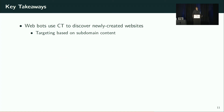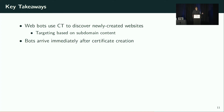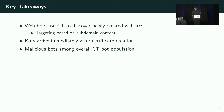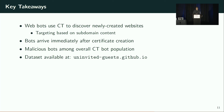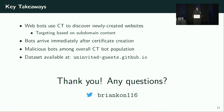In conclusion, we found that web bots use CT to discover newly created websites, that they target domains based on subdomain content, and exhibit different behaviors depending on their intent. Bots arrive immediately after certificate creation, meaning website administrators should create their certificate as the last step of setup, after all security mechanisms are in place and thoroughly tested. We also found that malicious bots are among the overall CT bot population, with many attempting to authenticate with services beyond HTTP servers. Our dataset is available at uninvited-guest.github.io. Thank you for your time, and I'd be happy to take any questions.